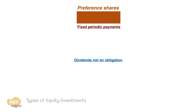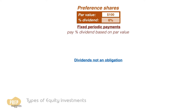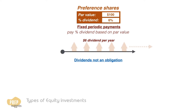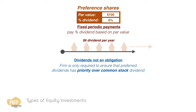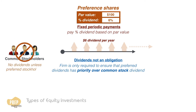Preferred shares have a stated par value and pay a percentage dividend based on that par value. For example, a $100 par value preferred share with a 6% dividend pays a dividend of $6 per year. However, such dividends are not a contractual obligation.